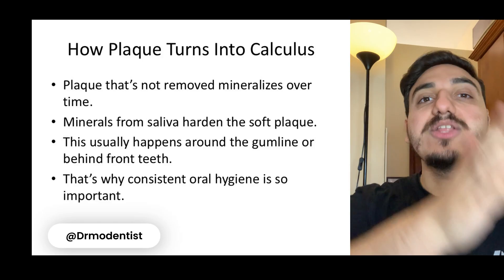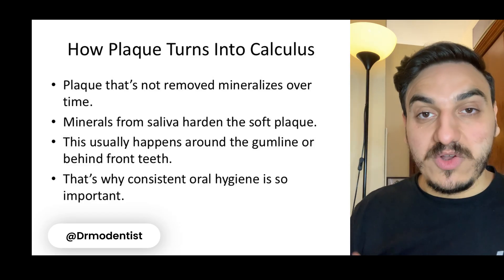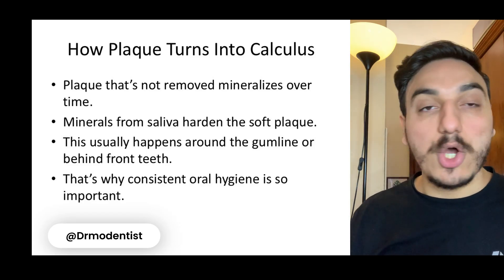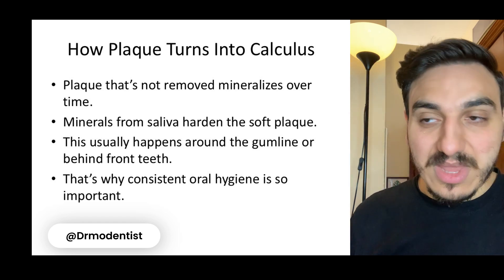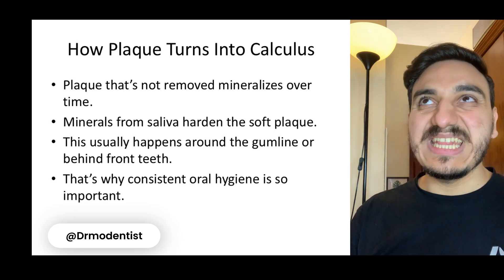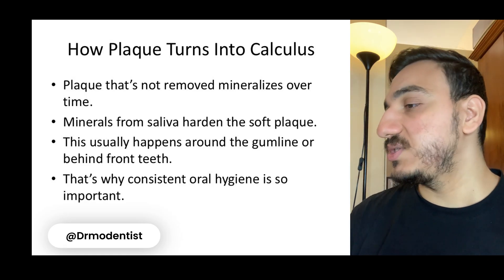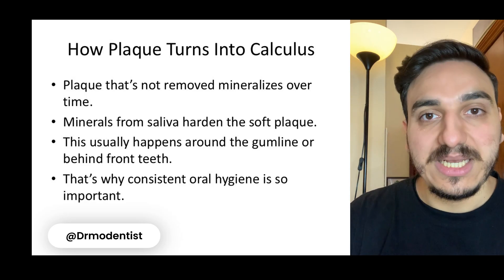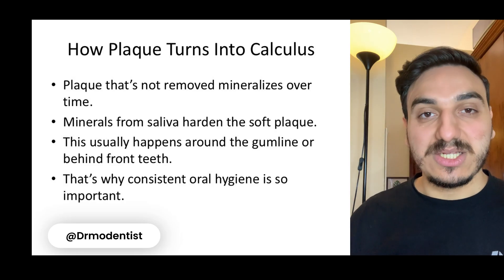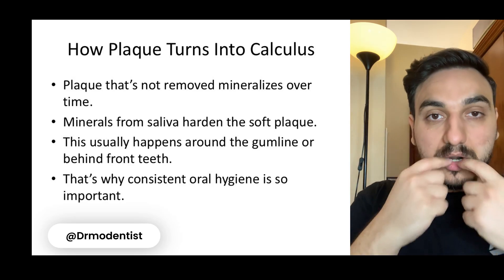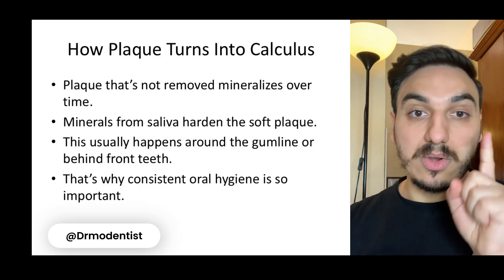How exactly does dental plaque turn into dental calculus? If plaque is not removed, it mineralizes over time. The minerals from saliva harden the soft plaque, making dental calculus much harder than dental plaque. This usually happens around the gum line or behind the front teeth. Dental plaque and calculus commonly form along the gum line around the teeth, which is why consistent oral hygiene is so important.